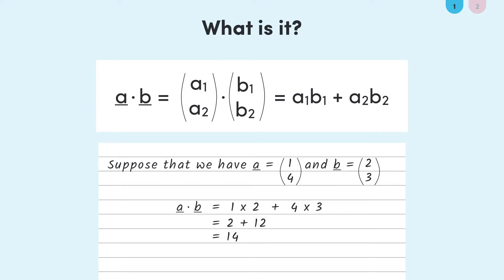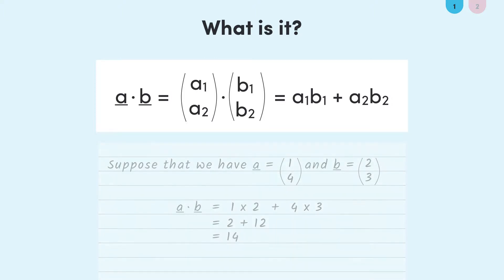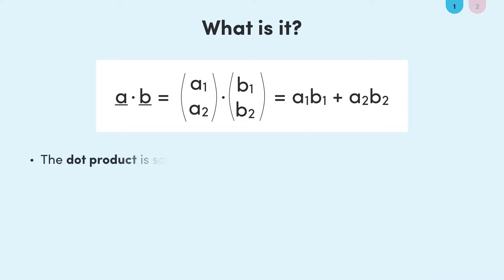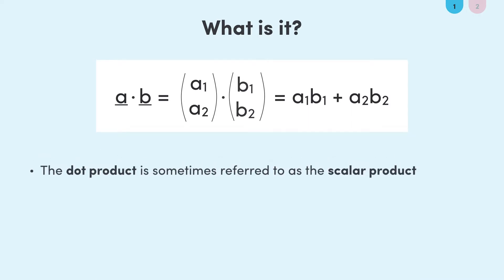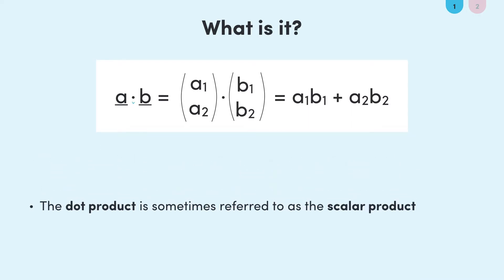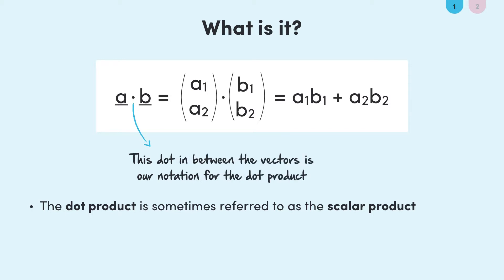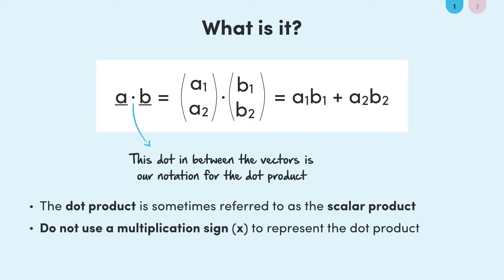One thing to note is that the dot product is sometimes referred to as the scalar product. I'll tend to run with dot product just because I think it serves as a reminder for the notation you have to use — you represent the dot product between two vectors with a little dot directly in the middle of the vectors. Do not use a multiplication sign.